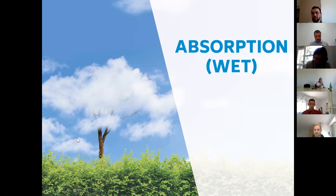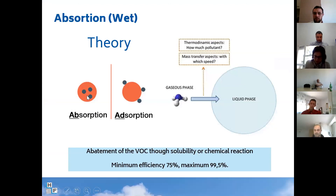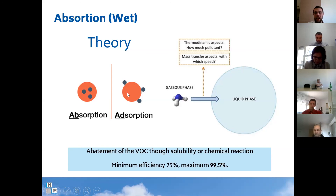After adsorption, let's go with absorption — it looks similar but is different. In adsorption, like active carbon, the VOC adsorbs onto the surface of a solid. In absorption, the VOC goes inside a liquid phase — it is solubilized into water. Again, there is no destruction and no oxidation like in a thermal oxidizer or biological treatment; here you have a separation from the gas phase to the liquid phase.